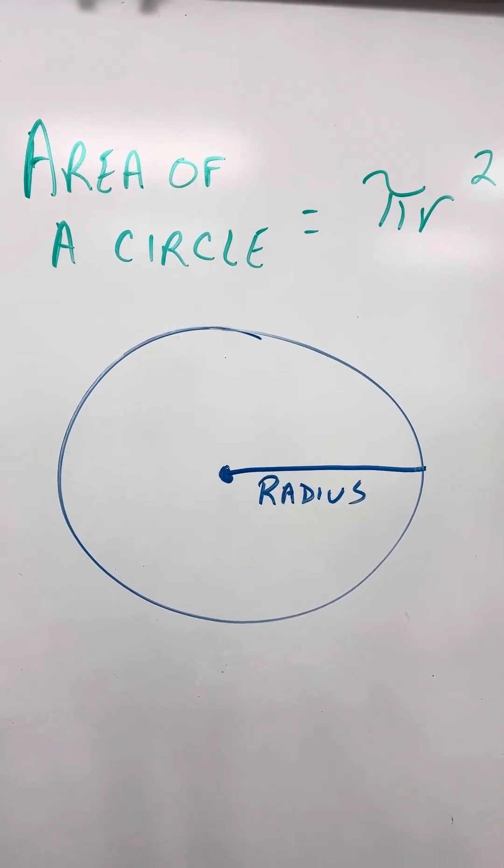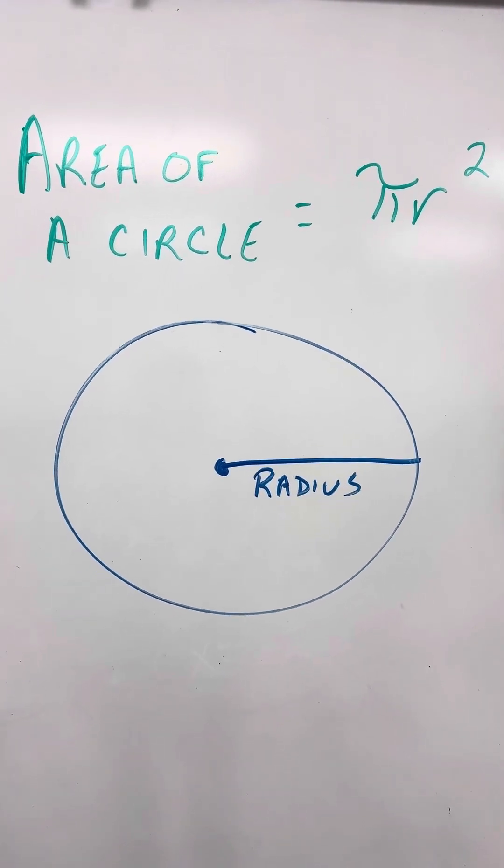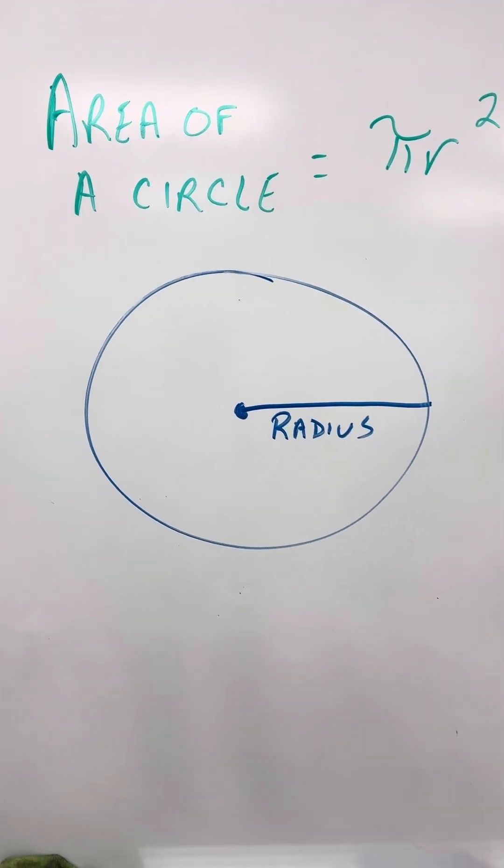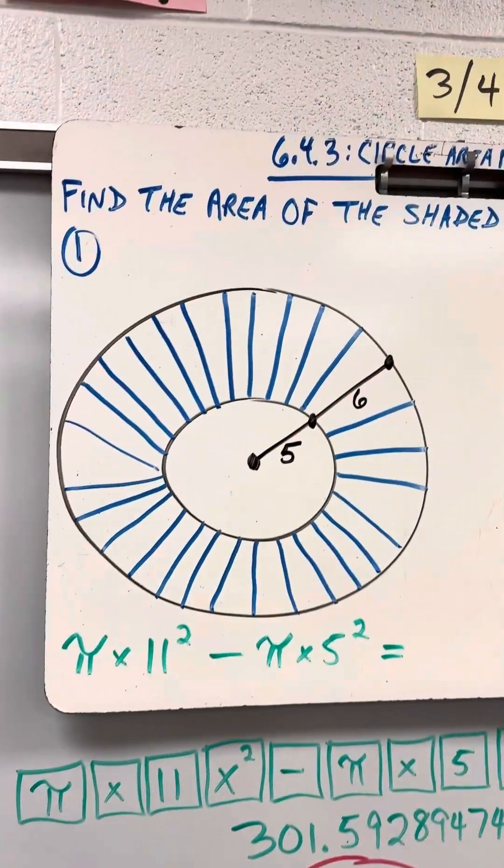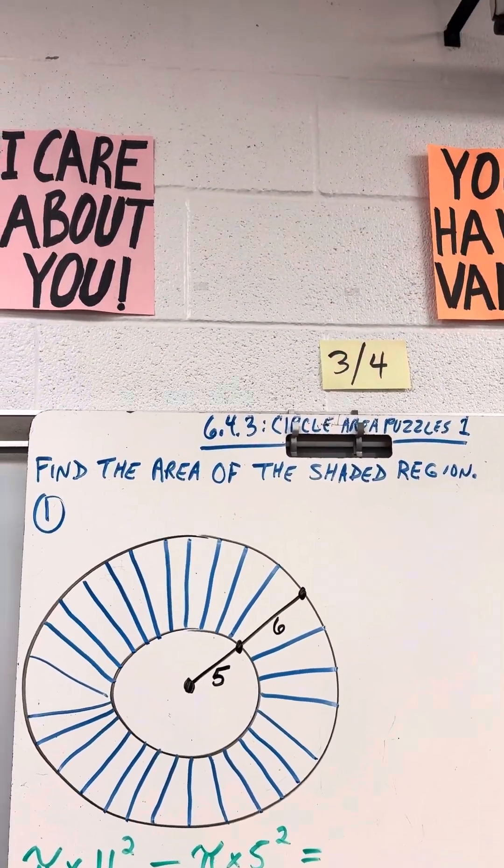So pi times radius squared is the area of a circle. Your problems are going to look like this. Find the area of the shaded region.